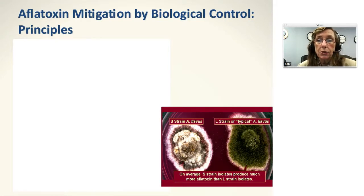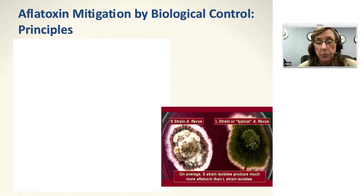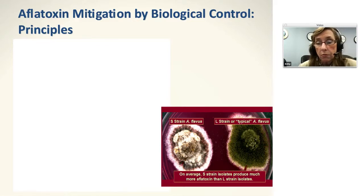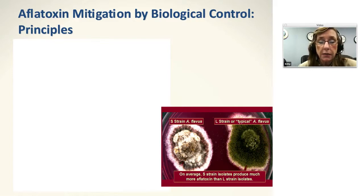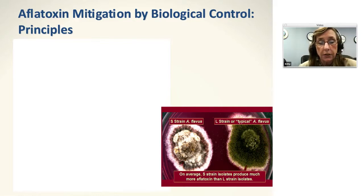Now we'll talk about biological control and how it works. There are a couple of different strains of Aspergillus flavus. There are L strains — when you see green on a grain it's probably going to be Aspergillus — that don't have any toxin and stay atoxigenic, non-toxic forever. There are also S strains, more prevalent in very hot dry conditions along the edge of the Sahel, in parts of Kenya, in Arizona, in Texas. These are strains that always produce toxins. If you're in a region where S strains occur, displacing this fungus is extremely important.